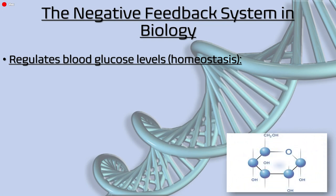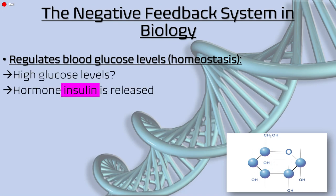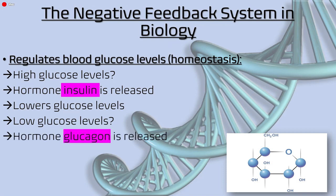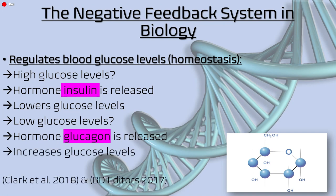How the blood glucose system works: if there is a high glucose level in the blood, the hormone insulin is released, which lowers glucose levels. If there are low glucose levels in the blood, glucagon is released, which increases glucose levels. This system therefore tries to return to an equilibrium state where the glucose level is neither high nor low — it's at a perfect state for the body to survive.